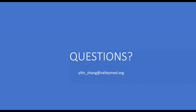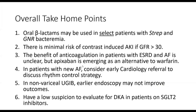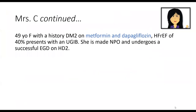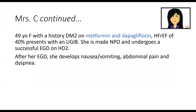For anyone who'd like to stay, I'll go over just a few slides about updates in endocrinology. You're taking care of Mrs. C—remember, she has a history of type 2 diabetes, she's on metformin and dapagliflozin, has HFrEF with EF of 40%, and came in with an upper GI bleed. She's made NPO and undergoes a successful EGD on hospital day two. After her EGD, she develops nausea, vomiting, abdominal pain, and dyspnea. Her labs show a bicarb of 12, blood glucose of 129, pH of 7.25, and urine shows ketones. What's the most likely diagnosis?